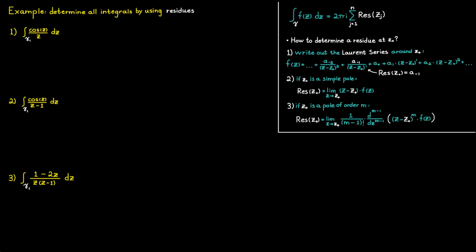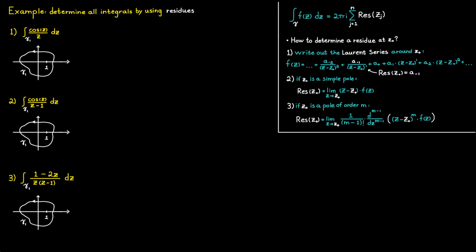Now I'd like us to determine several integrals using residues. The contour is going to be the same for all of these problems. In the first example, the function has a pole of order 1 — also known as a simple pole — at c equals 0. If we apply the residue theorem to this integral, we get the following expression. Notice that we only have one isolated singularity inside this contour, which means we will only have to determine one residue.